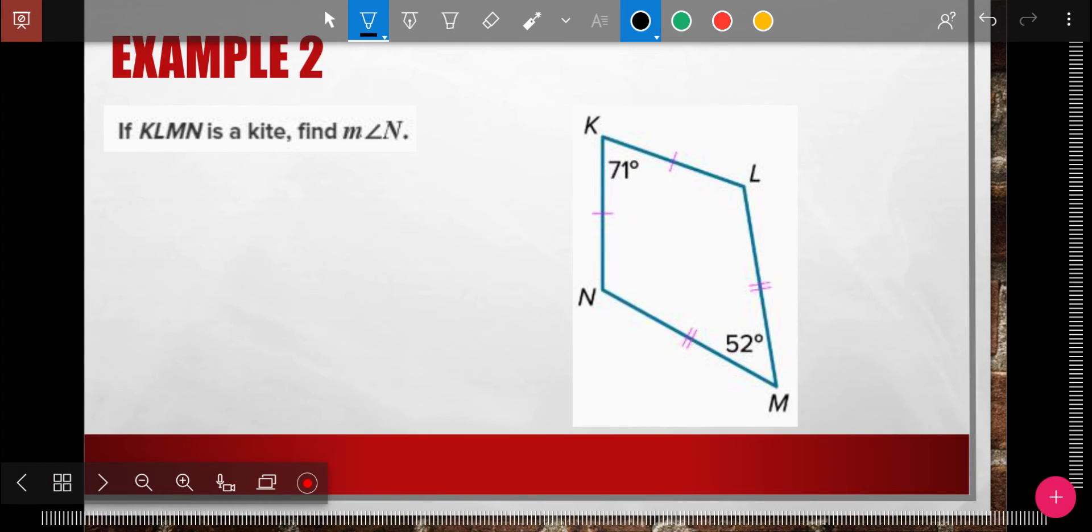All right. This shape is a kite. So what are my rules of a kite? Well, diagonals are perpendicular. One set of opposite angles are congruent. So N is congruent to L. So that's the first thing I want to remember here is angle N is congruent to angle L.